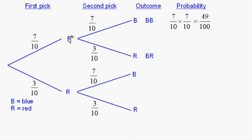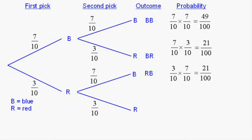The next branch is first blue, then red, BR for short, seven tenths times three tenths, 21 over 100. This branch here is first red, then blue, RB, three tenths times seven tenths, 21 over 100, 21 hundredths.